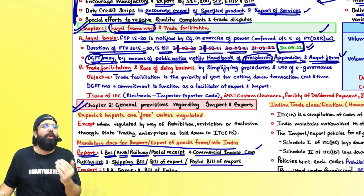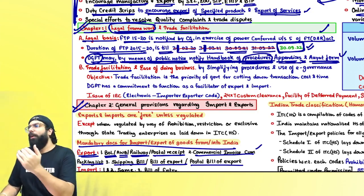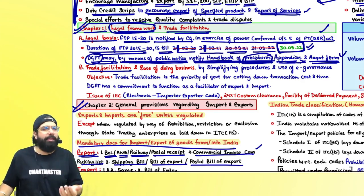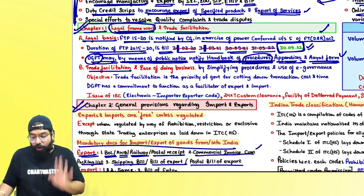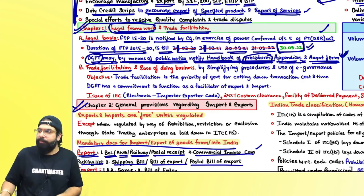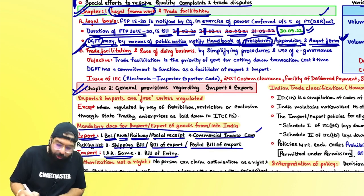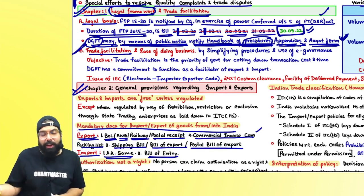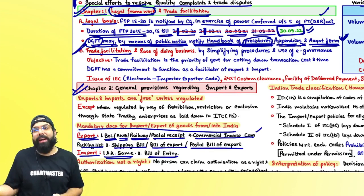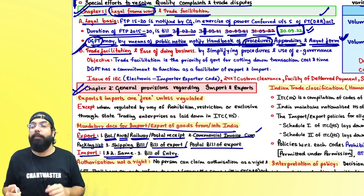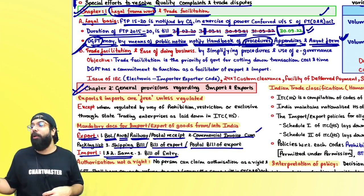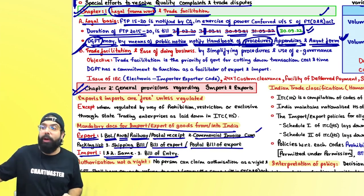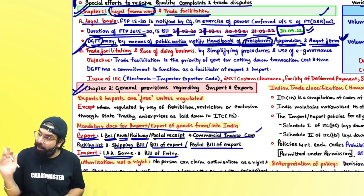The IAT/ANF forms are all those forms required in foreign trade. For example, if you want an import-export code, DGFT will notify which form is required. Customs basically follows what is told by the foreign trade policy — if something is restricted or prohibited in FTP, customs must ensure you cannot import or export it.